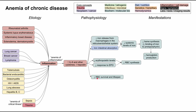Lastly, inflammation also decreases red blood cell survival and lifespan. When you take all these things together — decreased hemoglobin production, decreased red blood cell synthesis, and decreased red blood cell survival — the net effect is that you'll have fewer red blood cells in the body, which is essentially the definition of anemia.